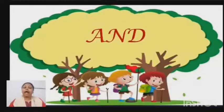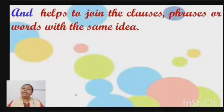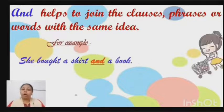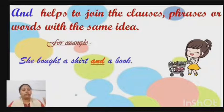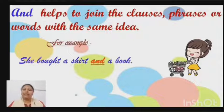Now let us see the second coordinating conjunction — it is 'and'. And helps us to join clauses, phrases, or words with the same idea. For example: 'She bought a shirt and a book.' Here we are joining two words — shirt and a book. You can clearly see that 'and' is used to join two words with the same idea.